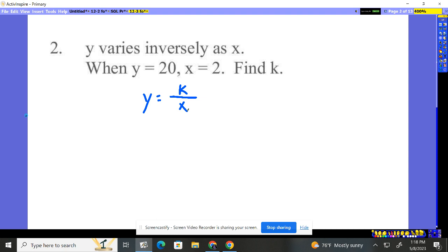So we got to try and find what k is. Well, it tells me y is 20. 40, k, which we're trying to find, over x, which is 2. Now how do I get ready to divide by 2? I multiply by 2. So guess what? That constant is 40.